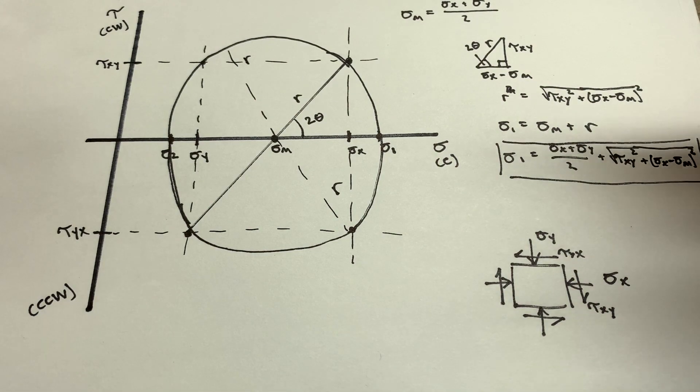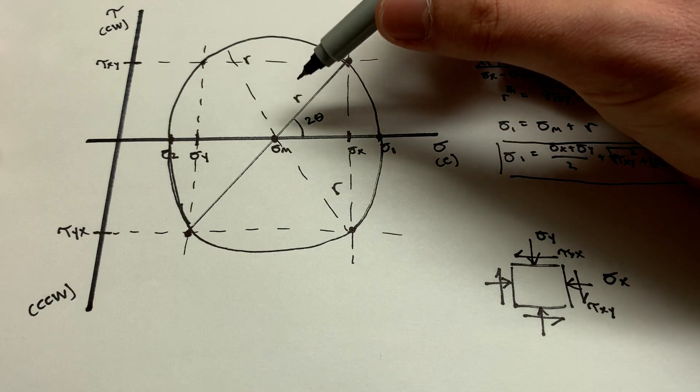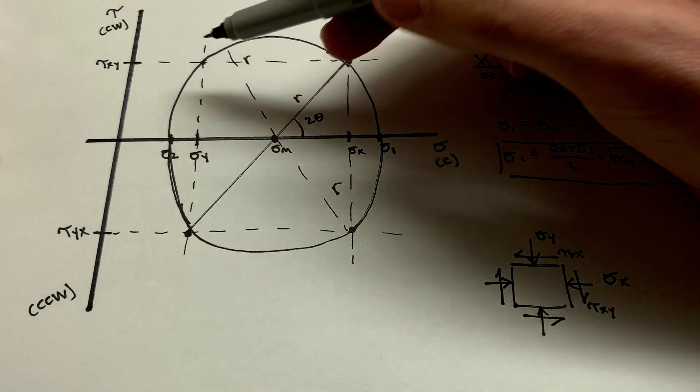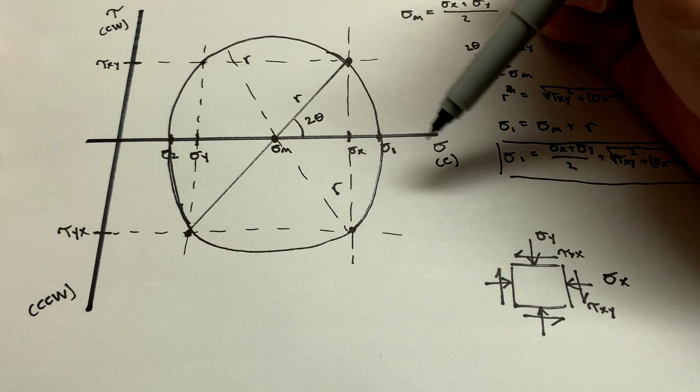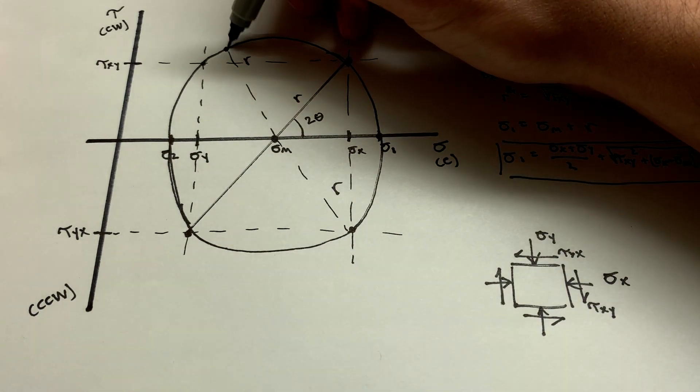And you could use that, too, once you have the principal stresses. Like in the last video, we did an example with a fault plane. Let's say you wanted to rotate it to find the stresses acting along that specific plane. Well, then, you know, you have all these geometric properties defined now, the radius, the distances you might want to move from sigma y, sigma m, sigma x, sigma 1 or sigma 2. So you could go and find the stress state at any point.